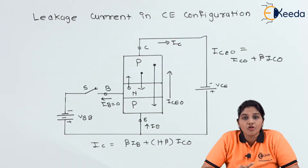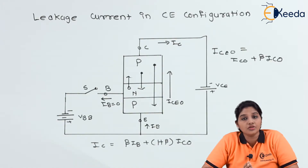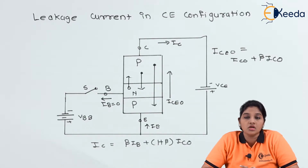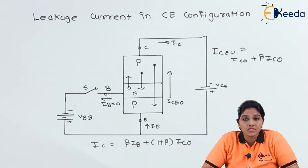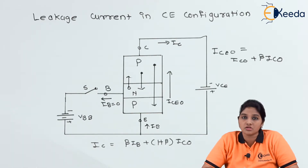Common emitter configuration is nothing but the configuration in which the emitter terminal is considered as a common terminal. In this case, the base-emitter junction is considered as the input and the collector-emitter junction is considered as the output.